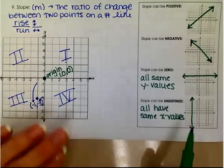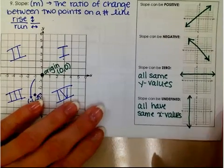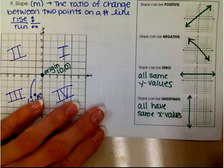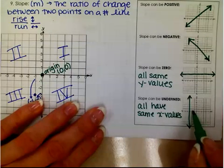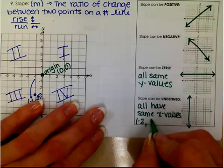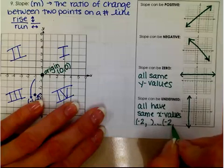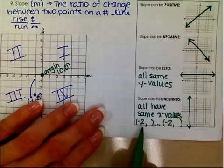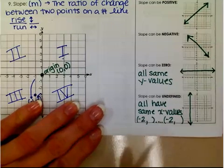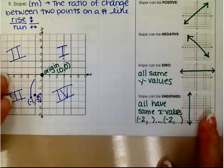If we look at the undefined slope, you will notice that since all of the ordered pairs on this line have the same x-values, all of the x-values on the line I drew would be negative 2. So it would be (−2, some number) all along. Since all of those ordered pairs have negative 2 as the x-value, you will recall that this is not a function since the x-values are repeating.